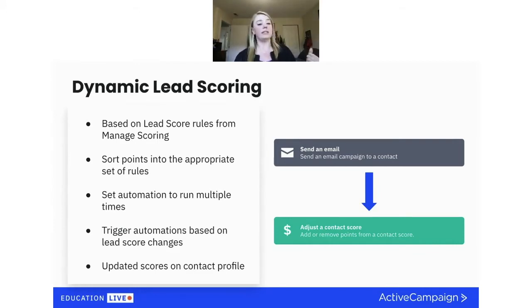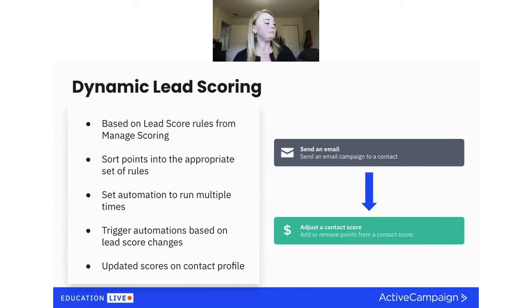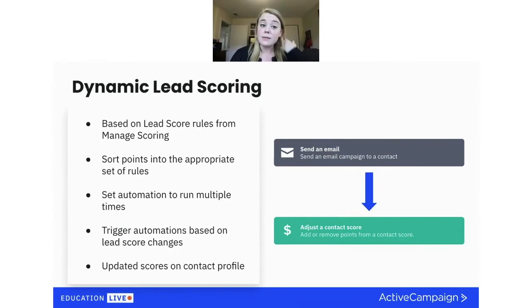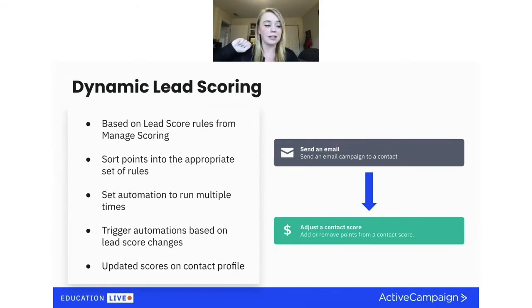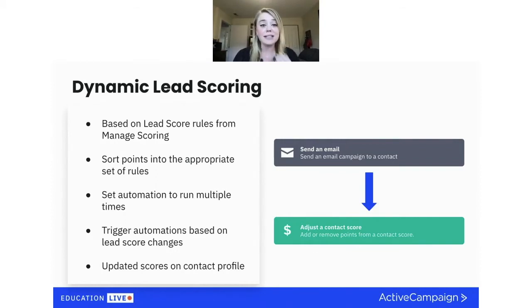You sort your points into the appropriate set of rules — think of rules like a folder where all your scoring information lives. You can set an automation to run multiple times. If you're sending emails and trying to give points every time someone opens an email, you can have an automation that runs every time someone opens an email and gives them a set number of points. Anytime someone clicks a certain link, give them a number of points — those automations run so contacts enter them every single time they do it. That's how you get that aggregate point count.